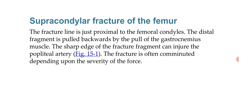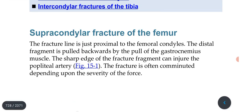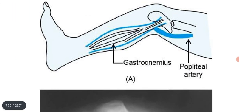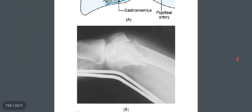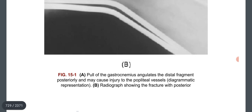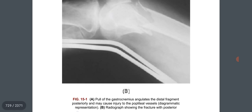The fracture is often comminuted depending upon the severity of the force. The pull of the gastrocnemius angulates the distal fragment posteriorly and may cause injury to the popliteal vessels.